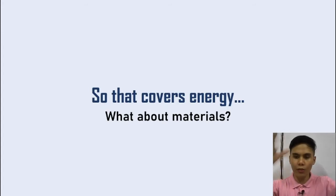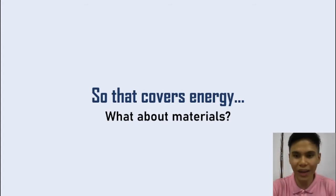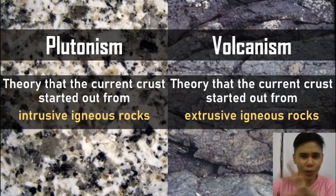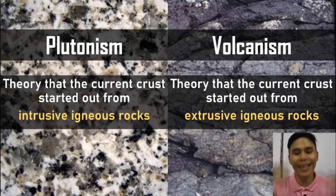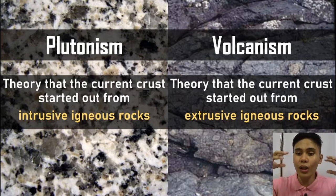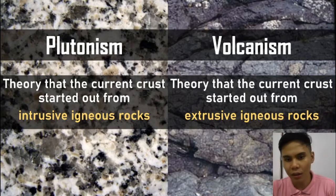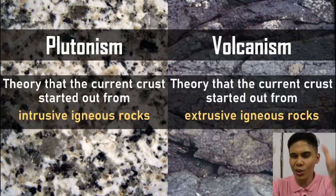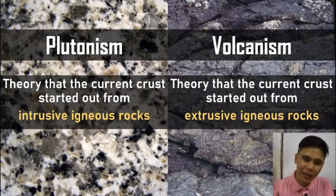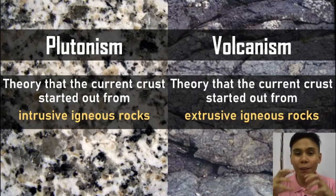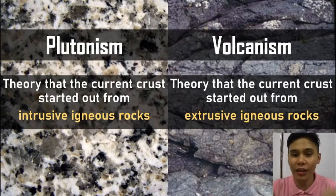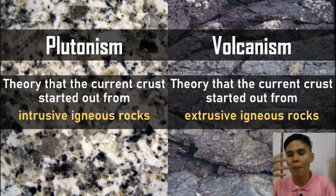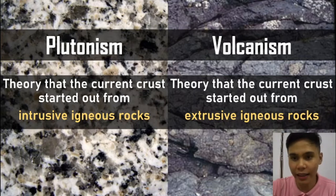What about the materials? How does inner Earth affect the materials of the outer surface? We have two theories. We have plutonism — a theory that says the current crust started out as intrusive igneous rocks, meaning the original crust of the Earth was mostly magma and weird stuff. It formed an extrusive shell, but that was just a temporary shell. The intrusive igneous rocks that formed under that initial shell supposedly formed the new oceanic and continental crust. Most of the crust today, according to plutonism, was made initially from intrusive igneous rocks that got processed through weathering and erosion.